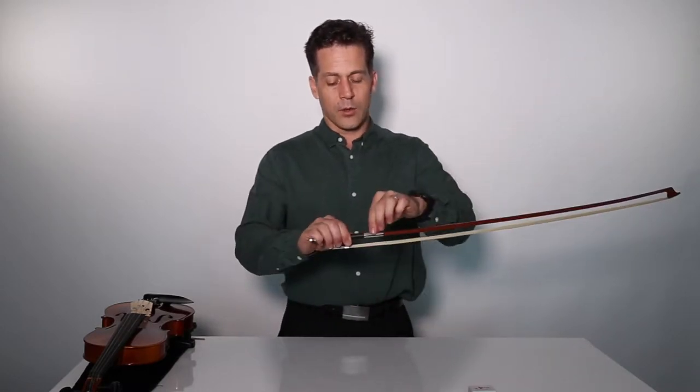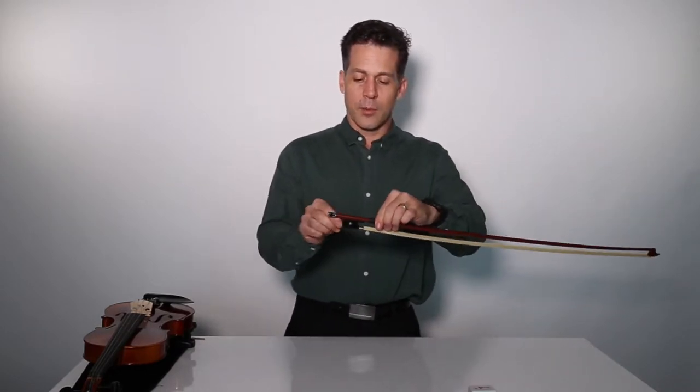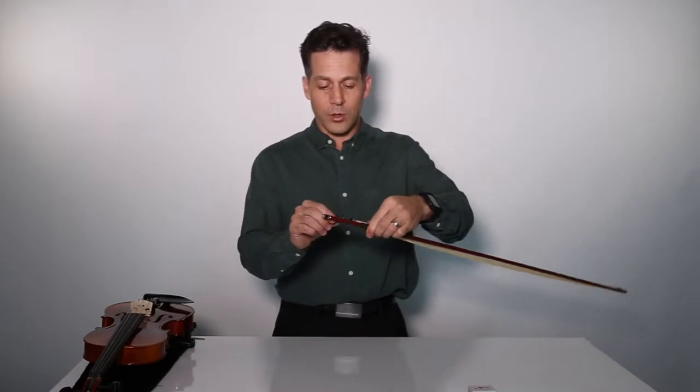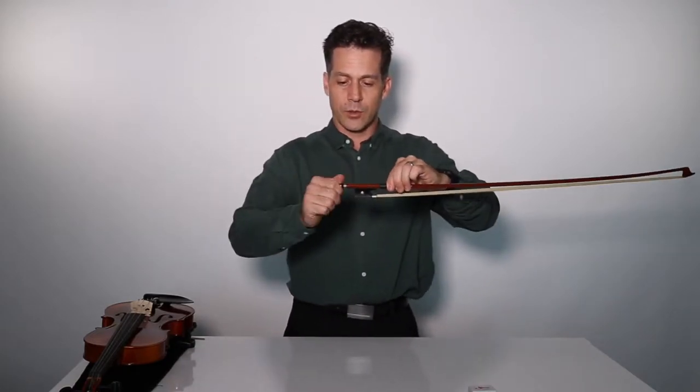This is the winding or the bow grip, the ebony frog with abalone in it, and this is the screw.